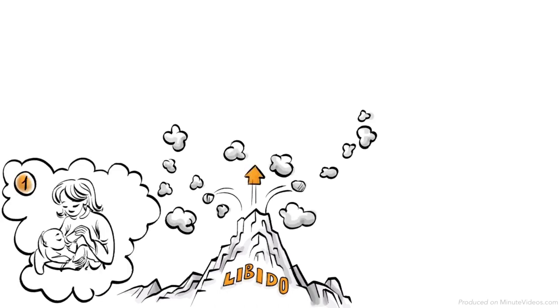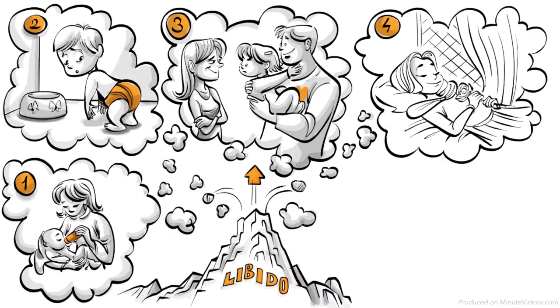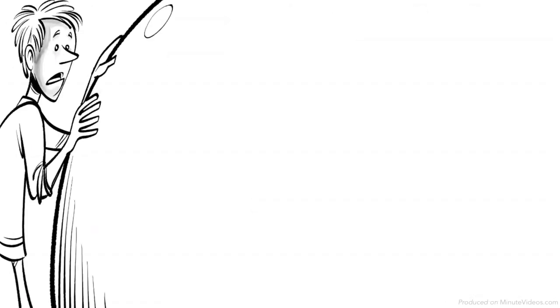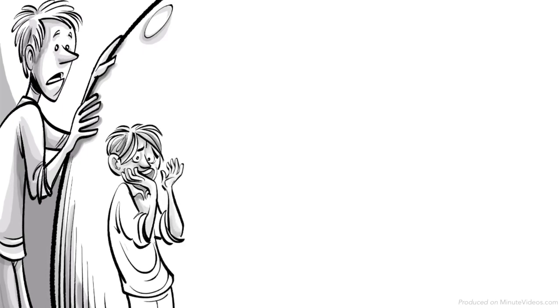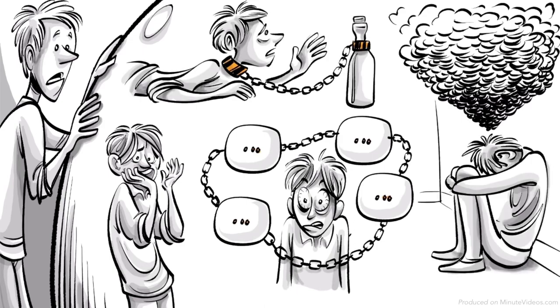The phases are called oral, anal, phallic, latency and genital. If our experience during any of these phases was traumatic we might develop fixations later in life such as neurosis, dependencies, addictions or depression.